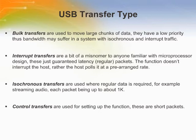Interrupt data is like bulk data. Interrupt endpoints have an associated polling interval that ensures they will be polled — receive an end token — by the host on a regular basis. Isochronous transfers are used where regular data is required, for example streaming audio, with each packet being up to about 1K.